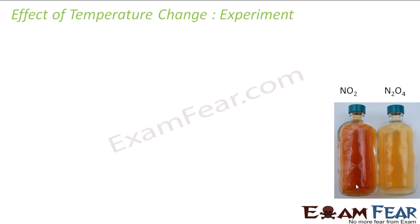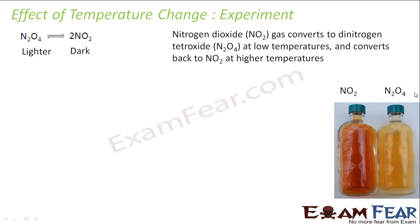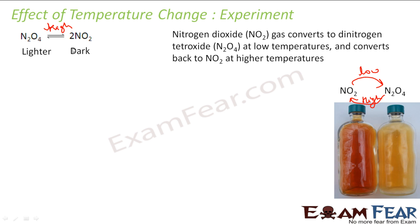Let's take an experiment on temperature change. You must have seen in the lab: NO2 and N2O4. NO2 is dark and N2O4 is light. At low temperature, NO2 moves to N2O4, and N2O4 moves back to NO2 at high temperature. So, if you give N2O4 high temperature, it becomes NO2. If you give NO2 low temperature, it becomes N2O4. This is what happens as per temperature change.